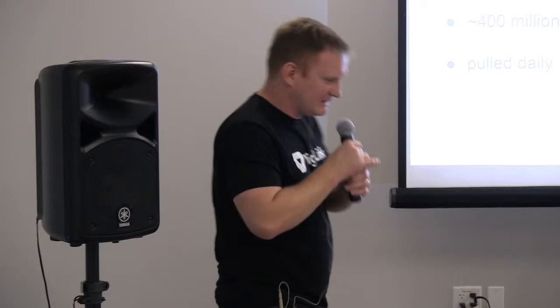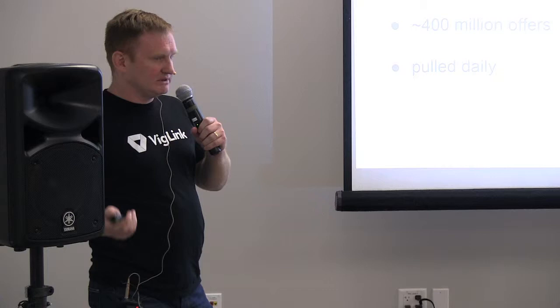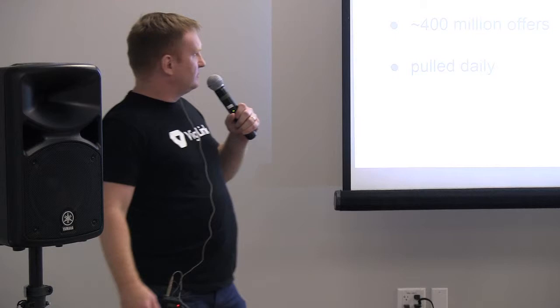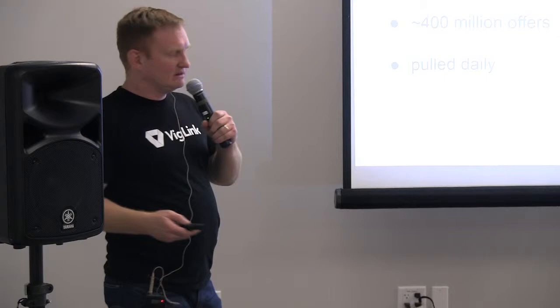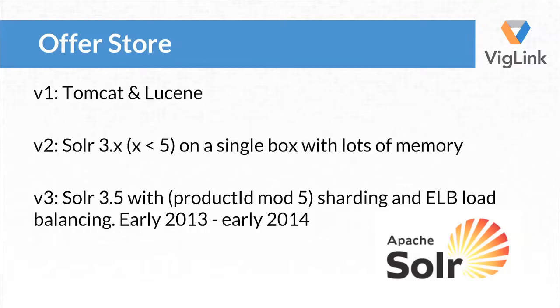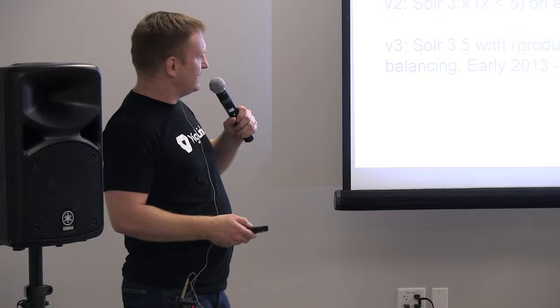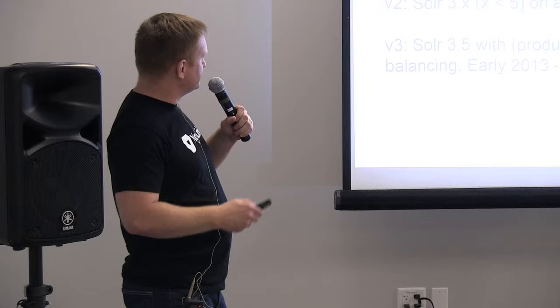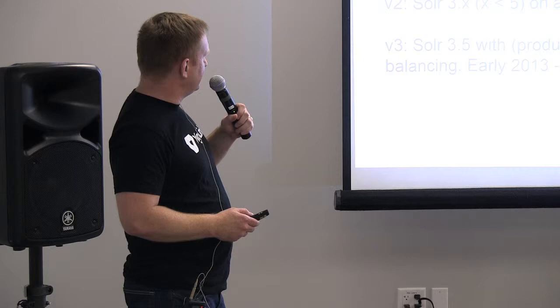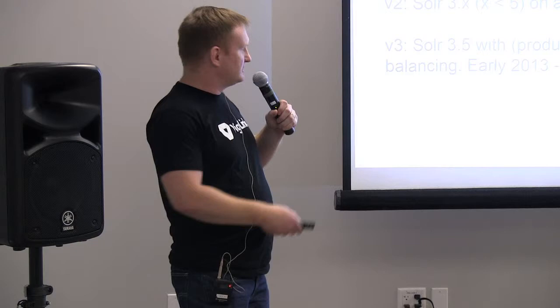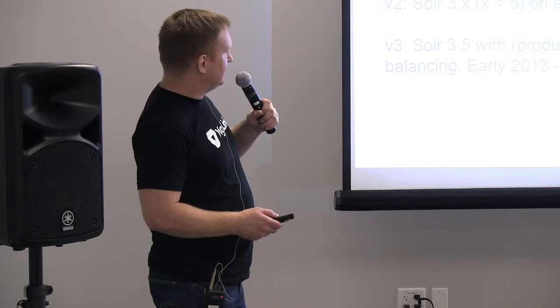I'll describe our offer store really quickly. We consume feeds — approximately 20 different feeds, some of which are composed of hundreds of files. That nets us about 400 million offers, and we refresh that every single day. There's a long story behind our offer store: we started many years ago just embedding Lucene in a Tomcat container. Then we moved to Solr — early versions of Solr 3 — still on a single box with lots of memory. Then around early 2013, on top of Solr 3.5, we did our own sharding — just a product ID modulo 5. That wasn't the most flexible arrangement with ELB load balancing.